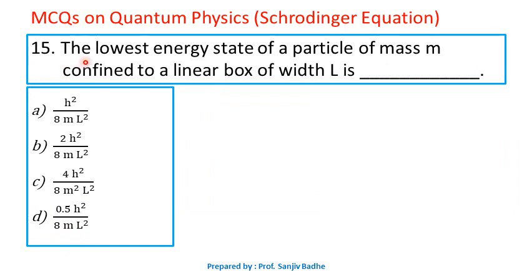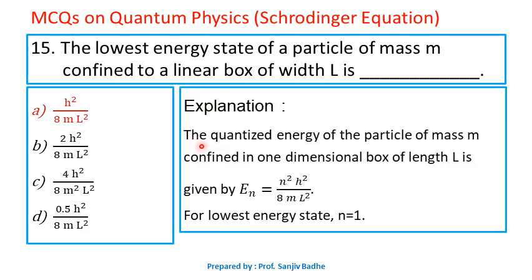Question number 15. The lowest energy state of a particle of mass m confined to a linear box of width L is — which option is correct? From the previous question, En = n²h²/8mL². For the lowest energy state, n equals 1, so the lowest energy is h²/8mL². Option A is correct.